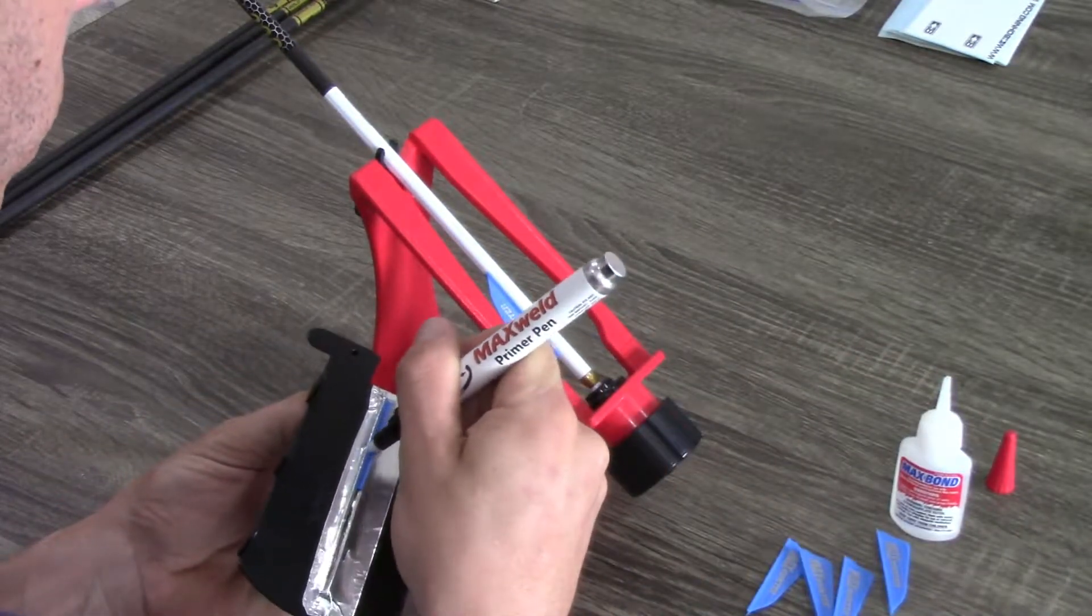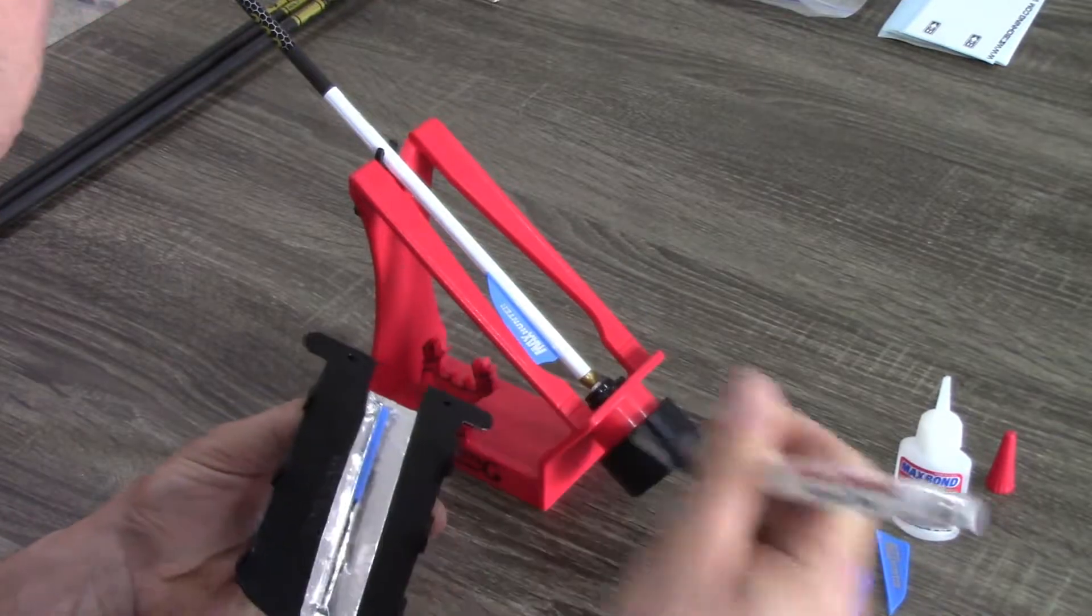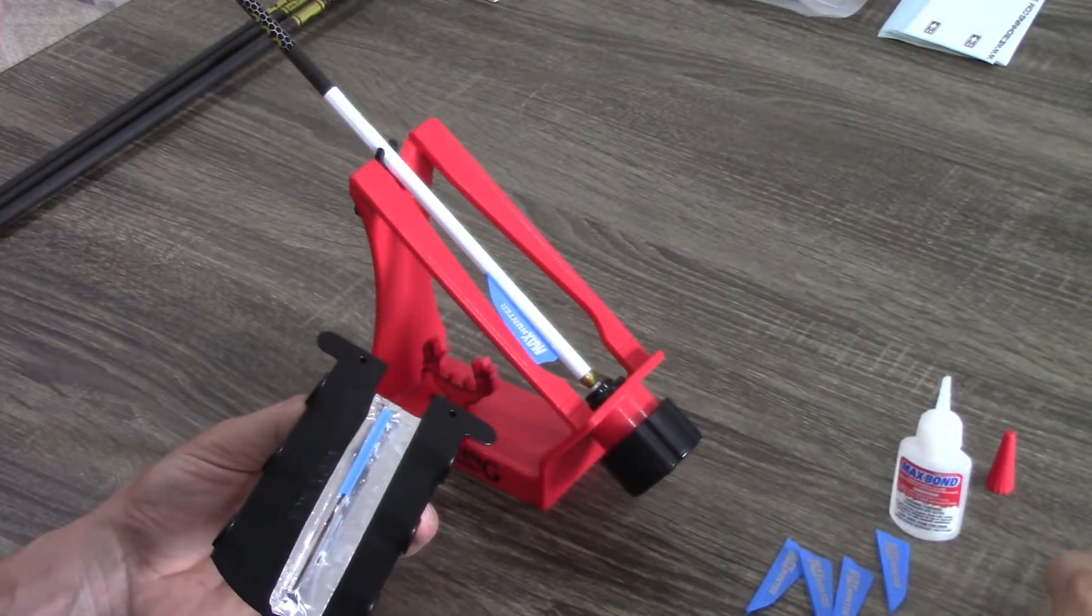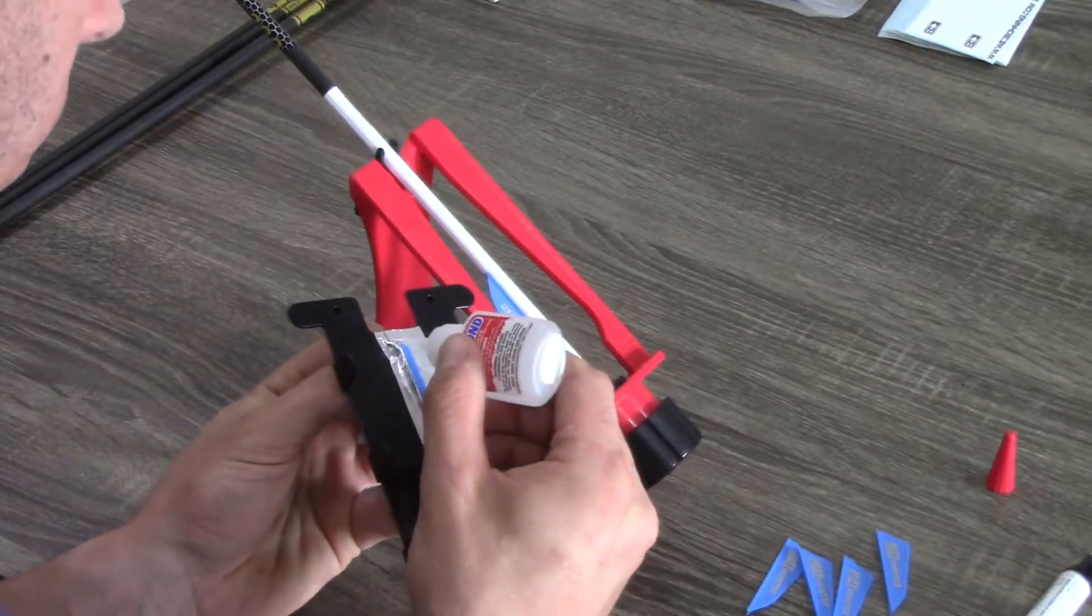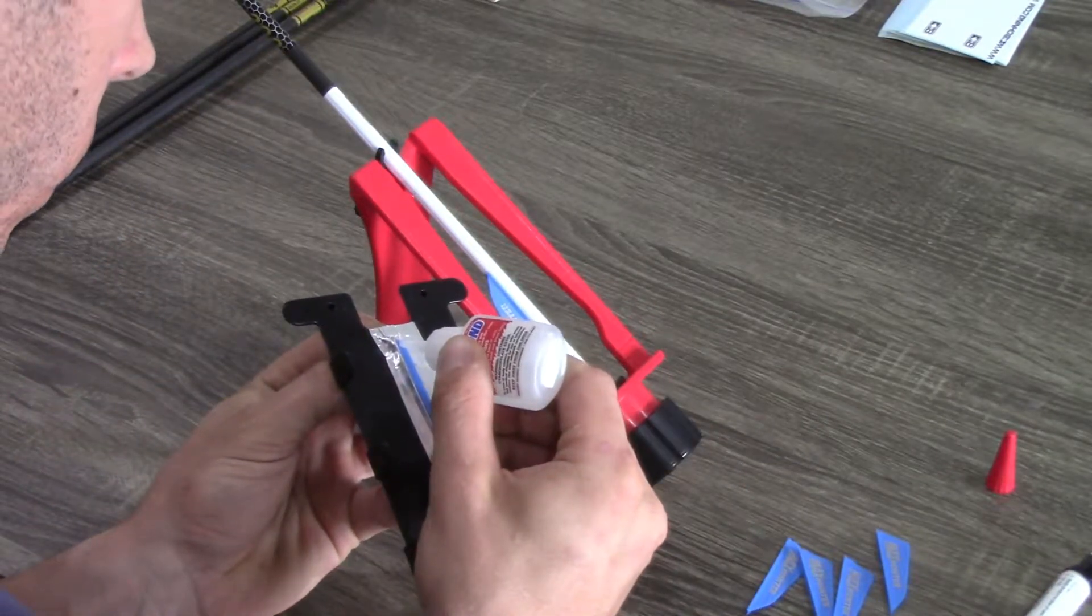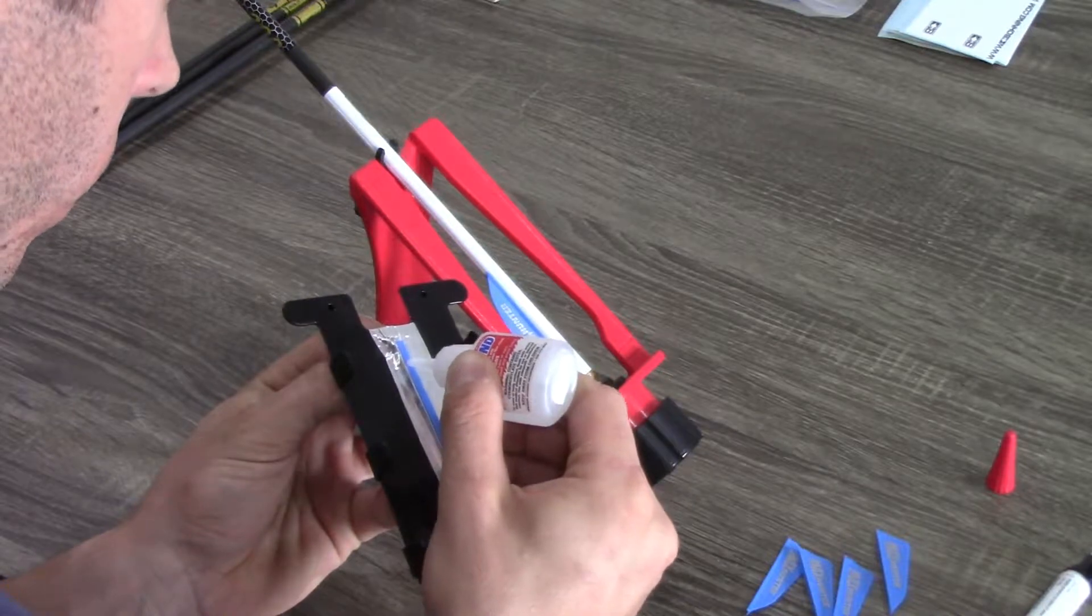This fletching jig also has a one-degree offset you could go with as well, but again, I'm wanting to get the most stabilization I can out of these arrows. So I'm going with the three-degree helical in an attempt to get, like I said, the best stabilization I can.